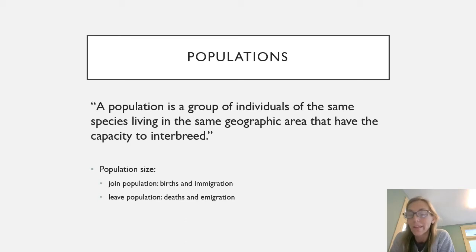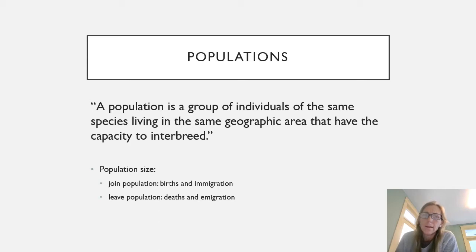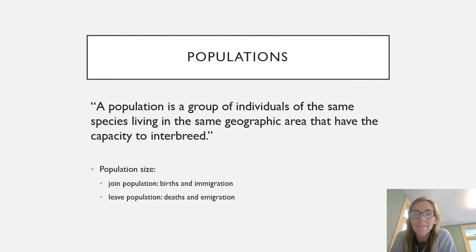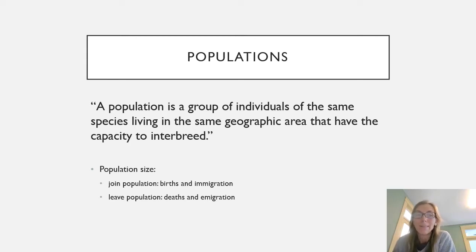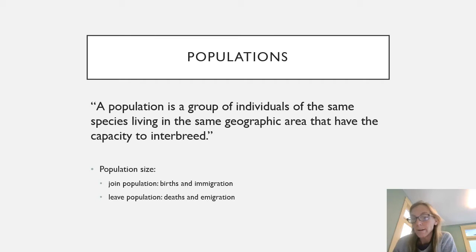Several factors affect maintaining a viable population, including having adequate food supply, sufficient home sites, and the ability to successfully reproduce. All of these can mitigate the effects of dispersal, immigration, climate, predation, disease, and parasites, which can all detract from the population.